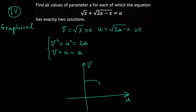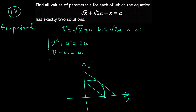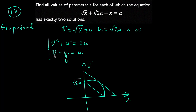Since v and u are non-negative (each is a square root), we draw a quarter circle and need the line to cross it at exactly two points. The two extreme positions of the line give one solution each. The circle has radius √(2A), so one extreme is when the line passes through (A, 0) on the v-axis: that gives A = √(2A), so A² = 2A, yielding A = 2.